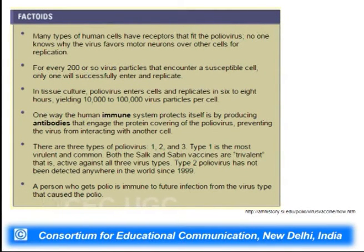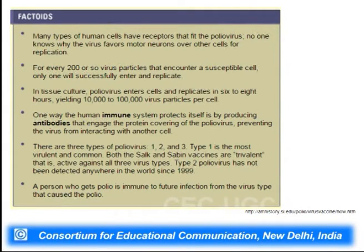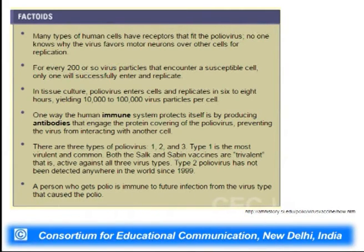Of the three types, type 1 is the most virulent and common. Both the Salk and Sabin vaccines are trivalent — active against all three virus types. Type 2 polio virus has not been detected anywhere in the world since 1999. These polio viruses attach to neuronal cells or motor neural cells, though the exact reason why they favor motor neurons over other cells for replication is still not fully known.